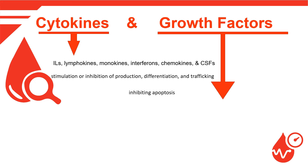KIT ligand, also known as stem cell factor, is an early-acting growth factor; its receptor is the transmembrane protein KIT. The binding of the KIT ligand to the KIT receptor triggers it to stimulate the cell to proliferate. FLT3 is also another kind of receptor that responds to FLT3 ligand.